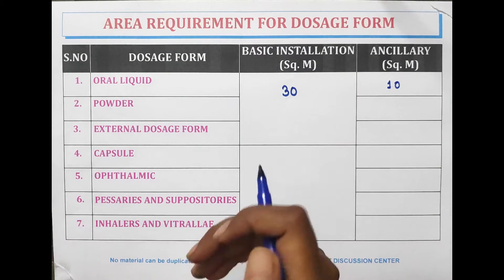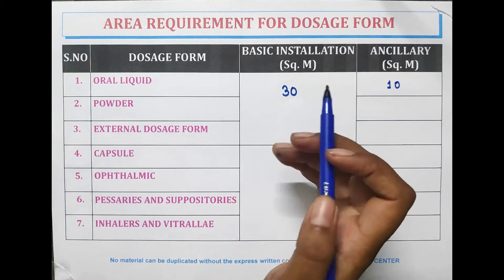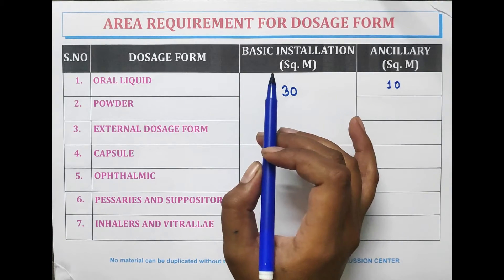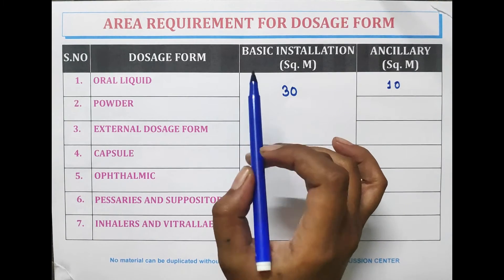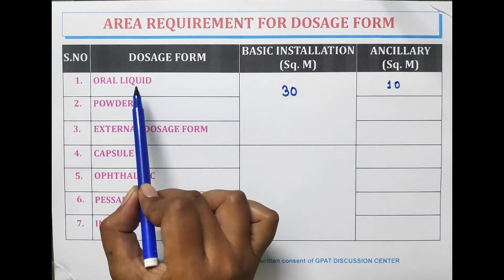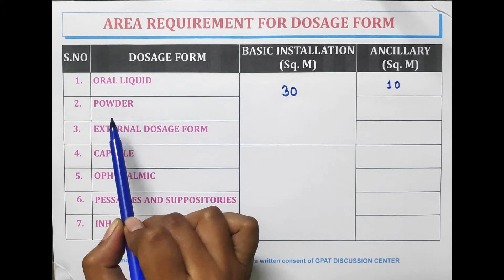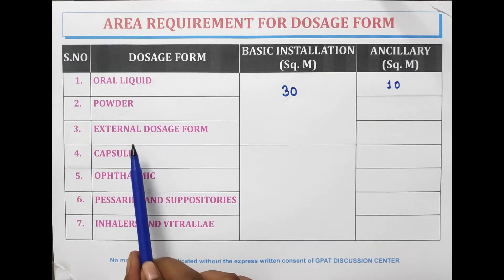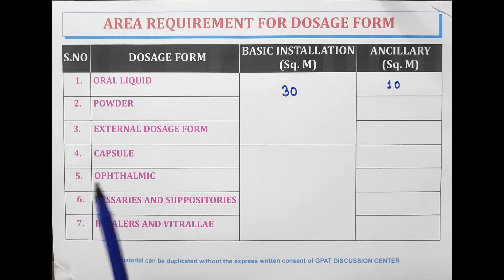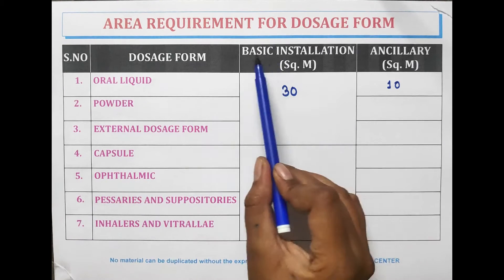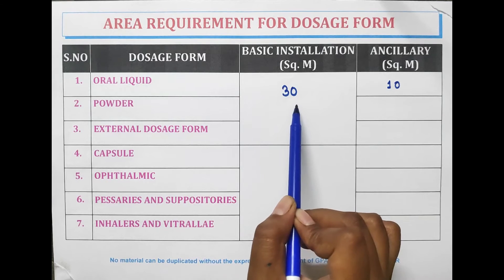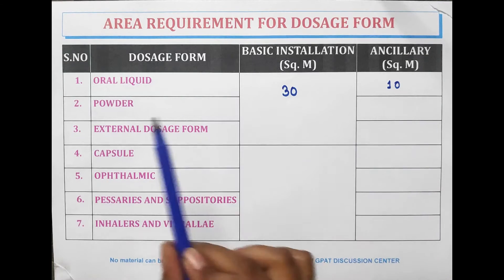Hello, welcome to GDC channel. In this video we are going to discuss the area requirement for dosage forms. For oral liquids, powders, and external dosage forms, the area requirement for basic installation is 30 meter square.